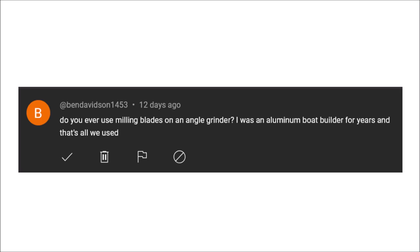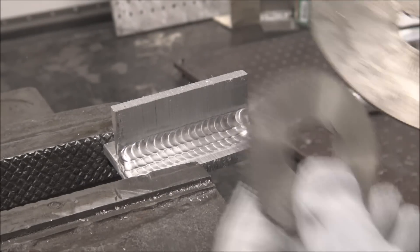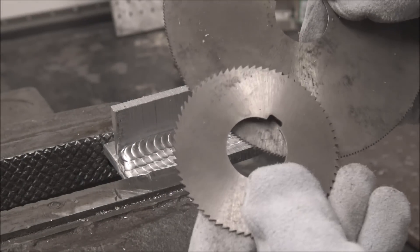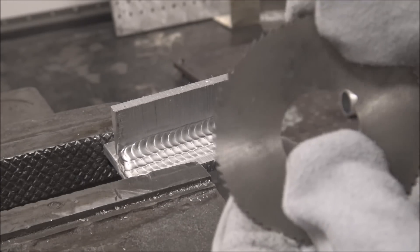A viewer asks: "Do you ever use milling blades on an angle grinder? I was an aluminum boat builder for years and that's all we use." Response: "Hi Ben, thanks for the question. By milling blades I'm assuming you mean slitting saw blades that you use in the mill. No, I haven't used these in an angle grinder but we'll try those out."